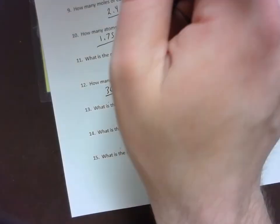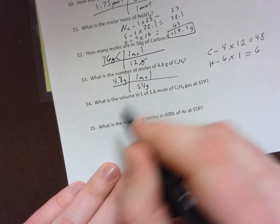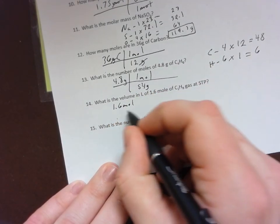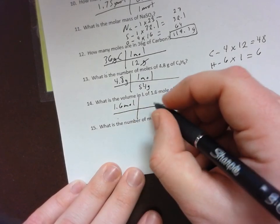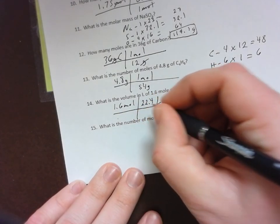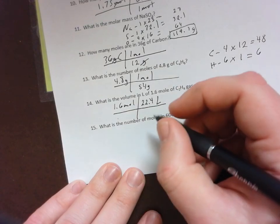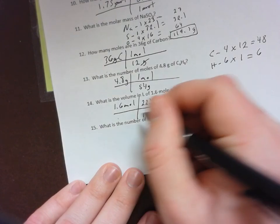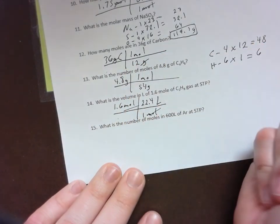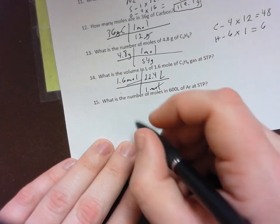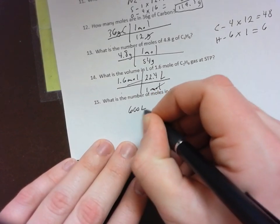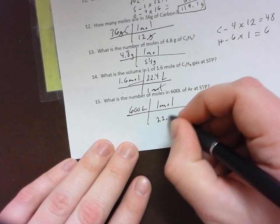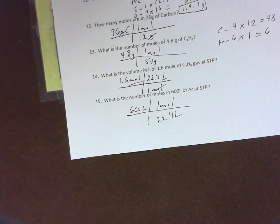With the volume, I have 1.6 moles and I'm trying to get to liters, so I'm gonna put in my 22.4 because I know that there are 22.4 liters in every one mole. The opposite is true here - I have 600 liters to start and I am trying to get to moles. Liters is the easiest one because it's just 22.4, and it's multiplying or dividing, no exponents.